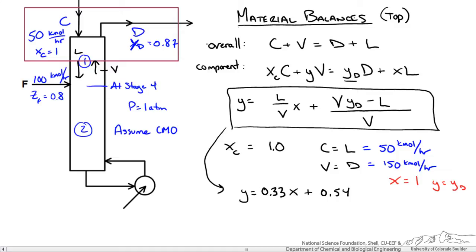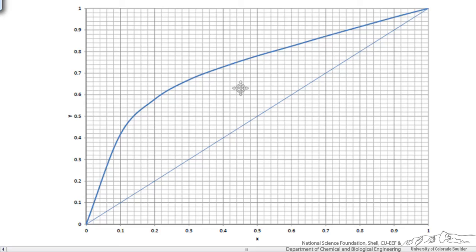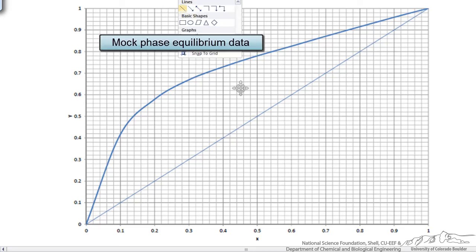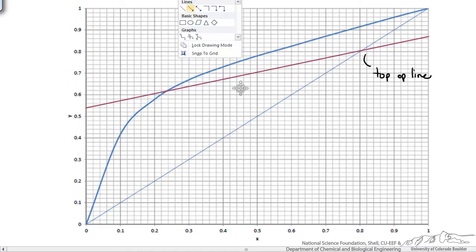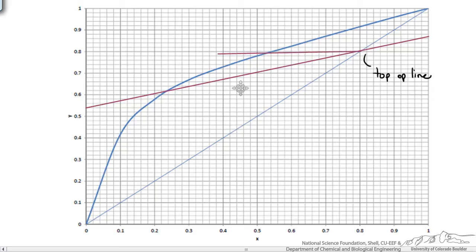Now we have an equation that we can plot on our McCabe-Thiele diagram which is shown here. We know our slope and intercept. If we were looking for our y intercept at x equals 0 we have y equaling 0.54. So this becomes our top operating line. We could also plot our feed line. We are told we have saturated vapor at composition z equals 0.8, so we go to the x equals y line at 0.8 and draw a horizontal line for saturated vapor all the way across.